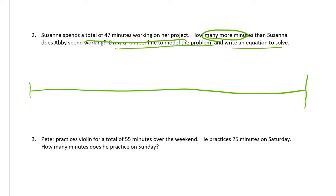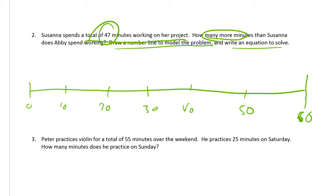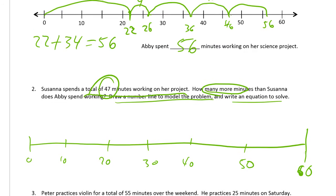It might be easier to think of your equation first. Let's start with zero and go to a whole hour — 60 minutes. We're counting minutes: 10, 20, 30 should be about in the middle, 40, 50. It's not perfectly spaced, but close enough — that's all you need, it's a math picture. So we need to find the difference between 47 and 56.